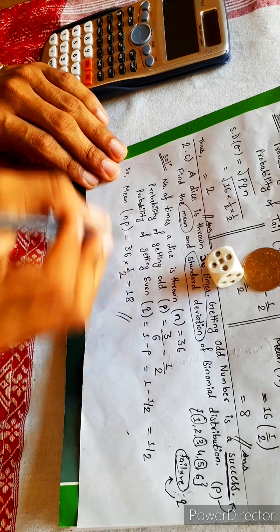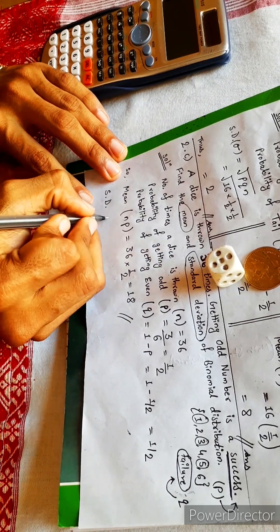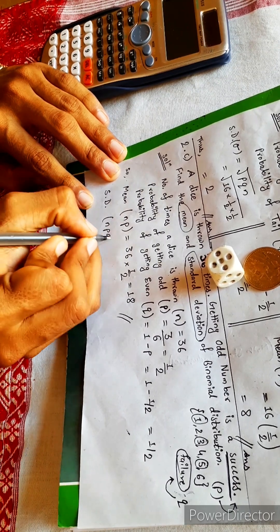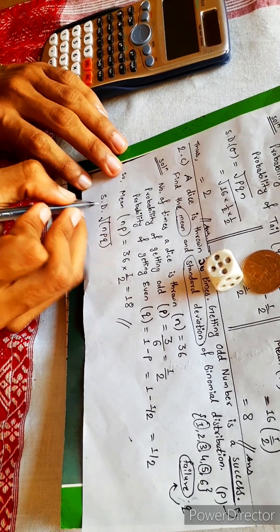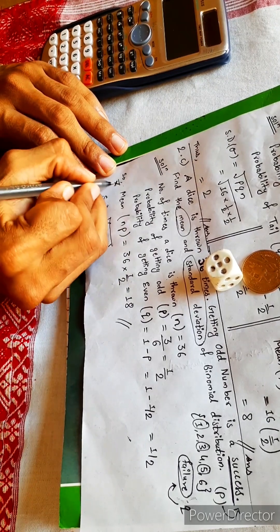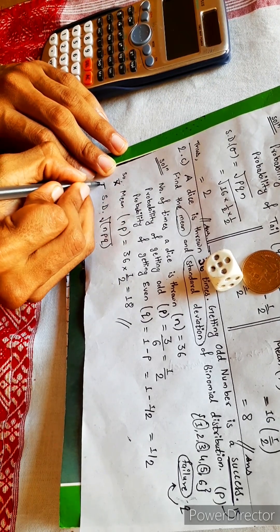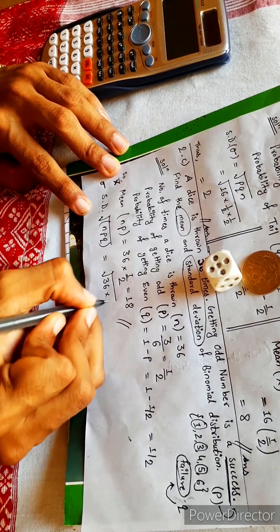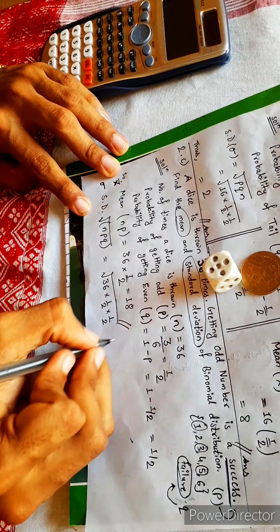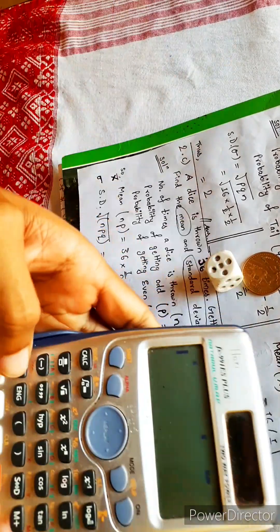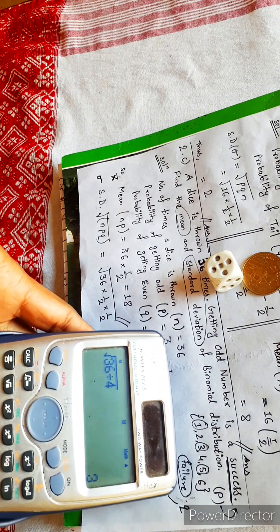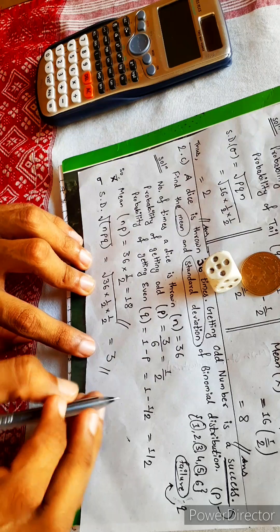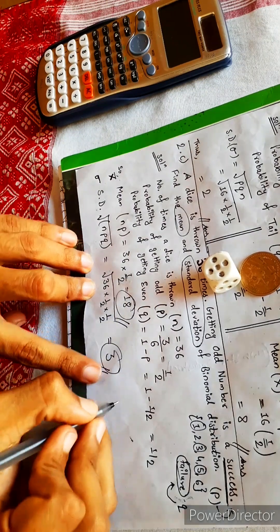Now similarly, standard deviation. Its formula is under root of N P Q. Mean means X bar. Standard deviation means sigma. Sigma equals to under root of N P Q. This will be under root of 36 by 4, which is under root 9, and under root 9 is 3. So standard deviation equals to 3.